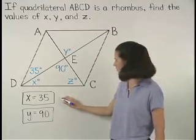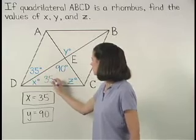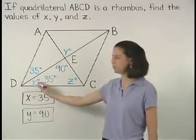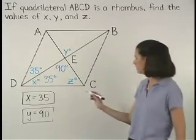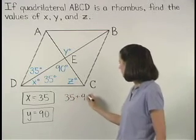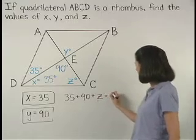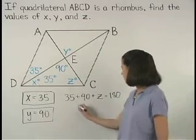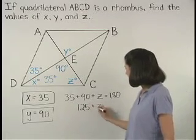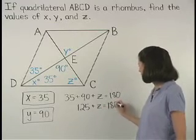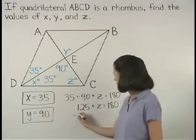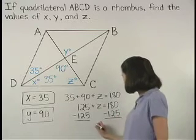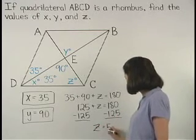And since we already know that X equals 35 and the sum of the measures of the angles of a triangle is 180 degrees, we can set up the equation 35 plus 90 plus Z equals 180. And simplifying on the left side, we have 125 plus Z equals 180. And subtracting 125 from both sides, we find that Z equals 55.